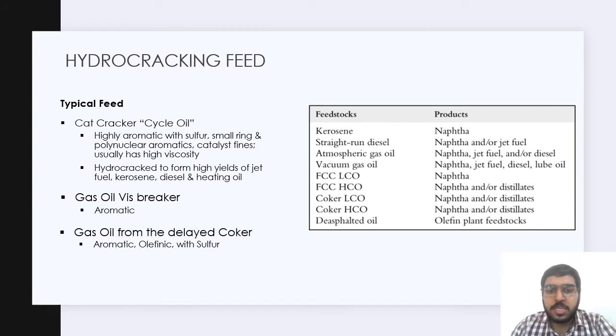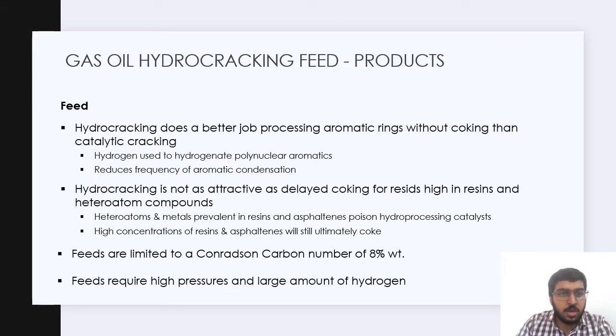On the right side of the presentation you can see some feedstocks and products. For example, if you have kerosene as feedstock you will get naphtha. If you have vacuum gas oil, the products are naphtha, jet fuel, diesel and lube oil. With FCC LCO as feedstock we get only naphtha. But with FCC HCO or coker LCO or coker HCO we get naphtha and distillates. With desulfated oil we get olefin plant feedstocks.